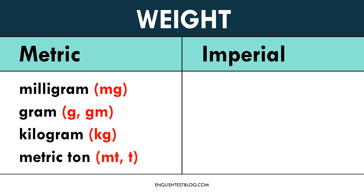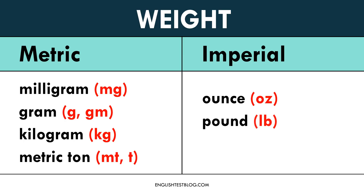The metric ton is used for large weights, like a car. One metric ton is equal to 1,000 kilograms. In the imperial system, the ounce is used for small weights like food ingredients — one ounce equals about 28.35 grams. The pound is commonly used to measure body weight or heavier objects. One pound is equal to 16 ounces, or about 0.45 kilograms.